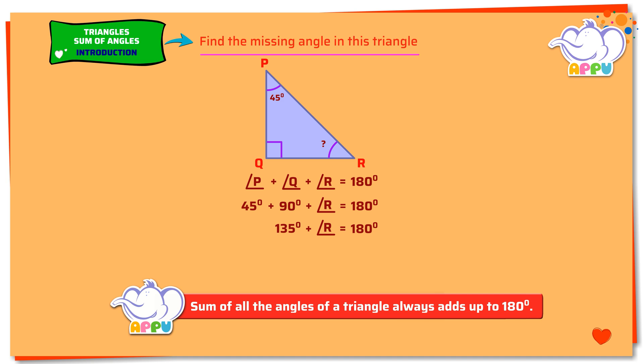Next, we subtract 135 degrees from both sides. We get angle R equals 180 degrees minus 135 degrees. That is equal to 45 degrees. The missing angle is 45 degrees.